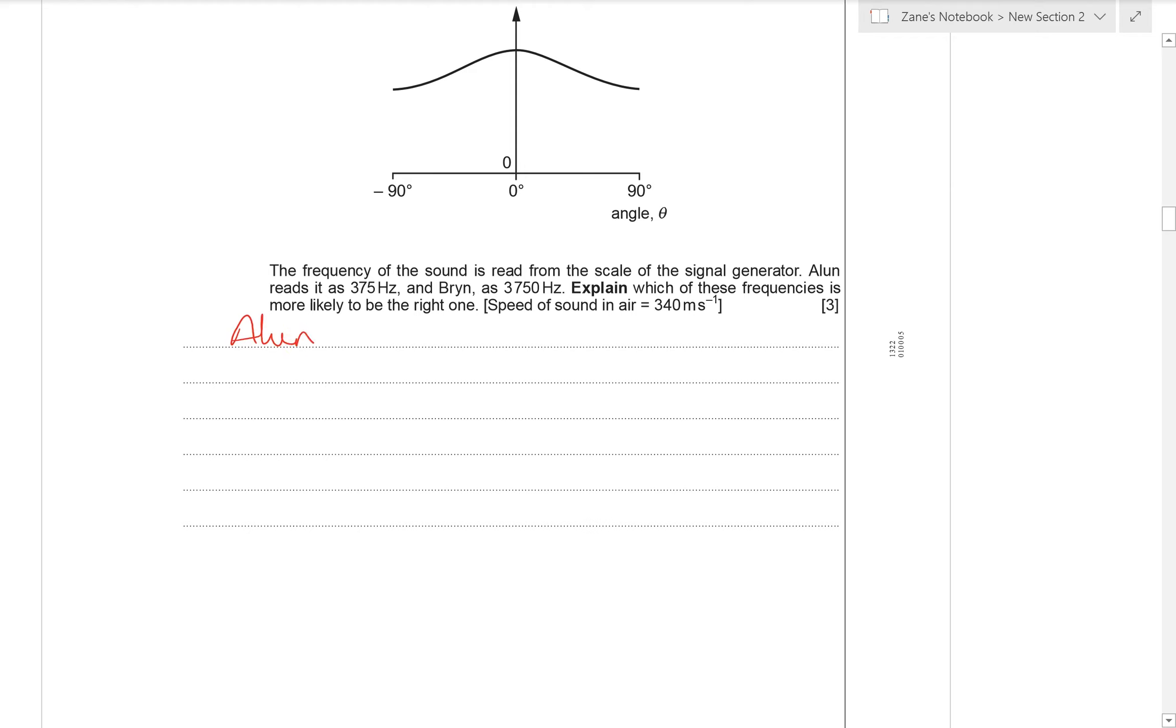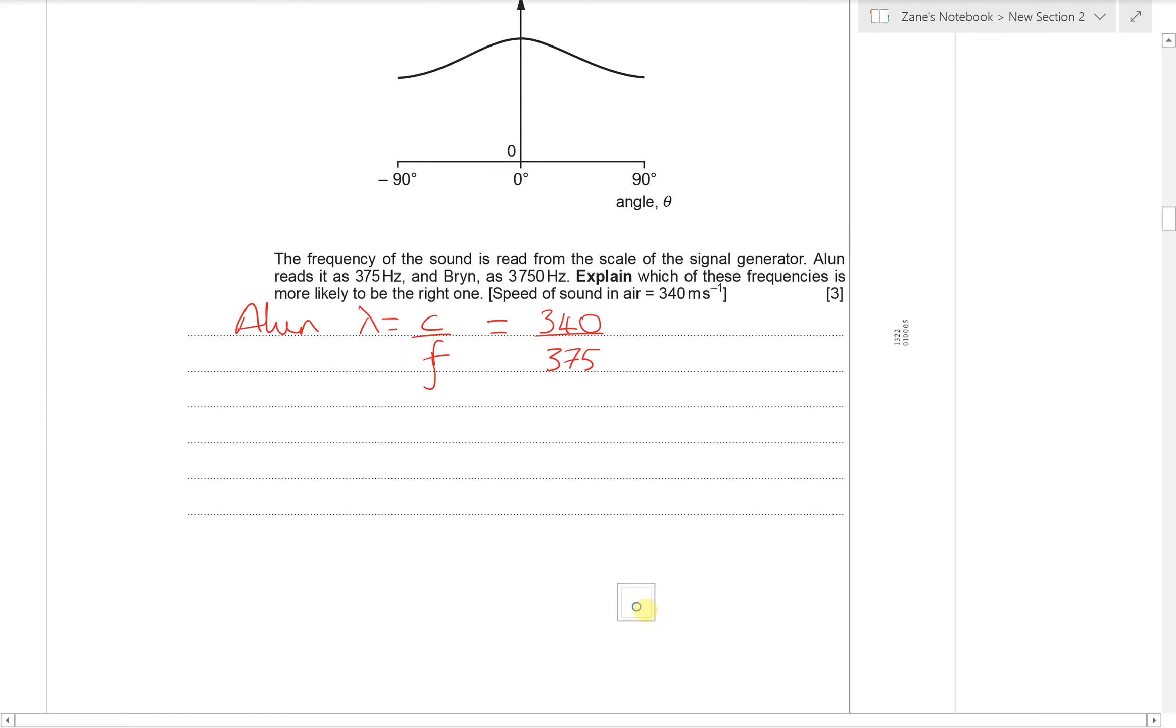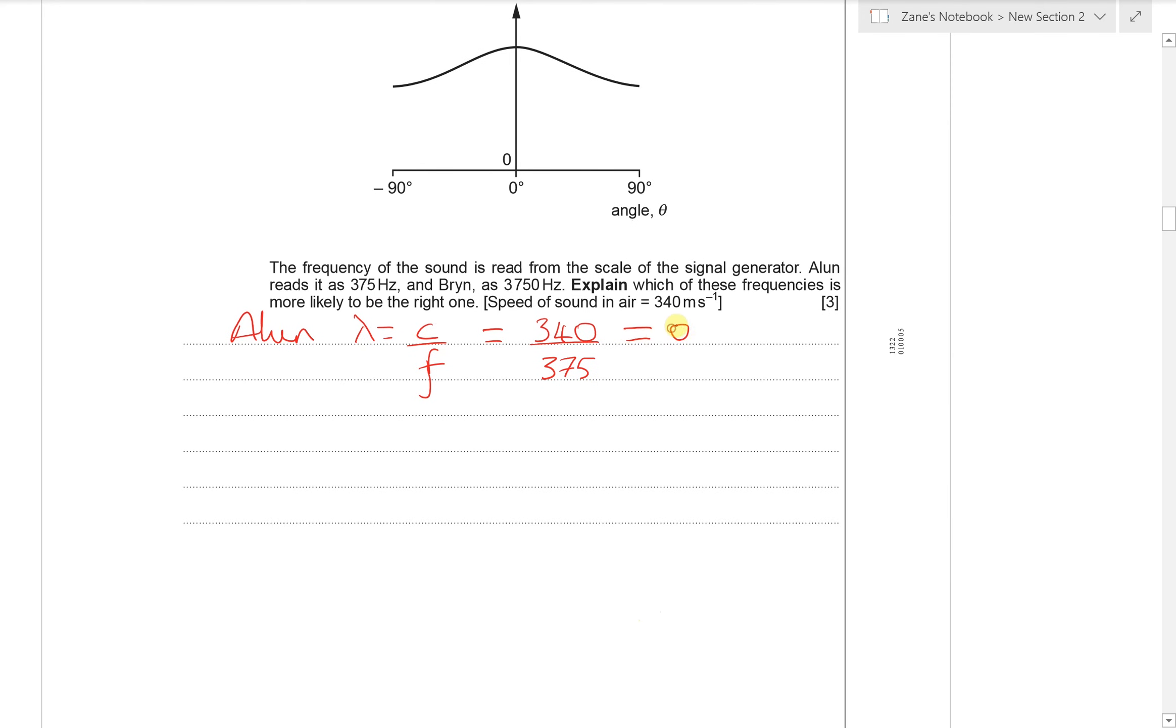So let's first of all do a calculation for Alan. We're going to work out the wavelength that the sound wave would have if he was correct. So we're going to use the speed of sound formula. Lambda is C over F, C being 340 meters per second as given in the question and the frequency 375 hertz. Putting that into the calculator gives us an answer of 0.91 meters. For Bryn we could do exactly the same calculation just changing the frequency to 3,750 hertz. But if we understand the proportionality there's inverse proportionality between wavelength and frequency. And because Bryn's frequency is 10 times larger than Alan's his wavelength will be 10 times smaller and hence 0.091 meters.